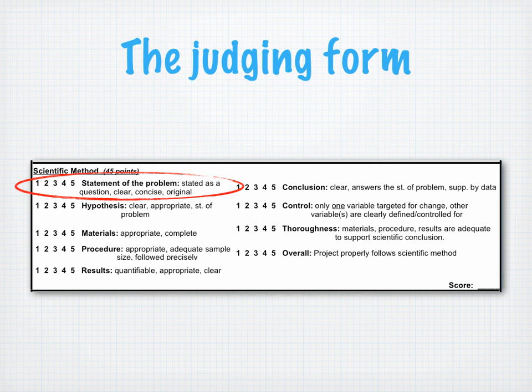A project that doesn't have a true statement of the problem but is strong in other ways would receive a two. And a project that doesn't have a true statement of the problem and has no other positive aspects would receive a one. The last element listed, overall, gives you the opportunity to reward a project that has covered all elements in a strong or positive way, or to penalize one that has been weak. Note that the most common challenges for students are studying a control group or focusing on the impact of just one variable. Here are three examples to help demonstrate how different projects might apply the scientific method.